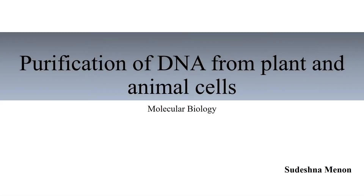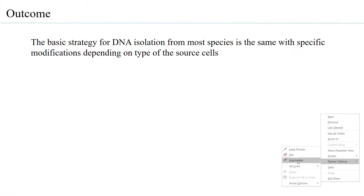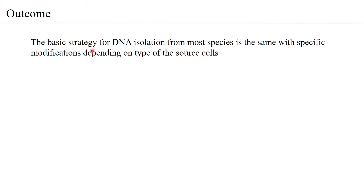Purification or isolation of DNA from plant and animal cells. The basic strategy for DNA isolation is more or less the same for most species, whether bacteria, plant, or animal cells, with certain modifications depending on the type of source cell.